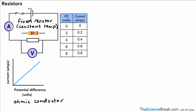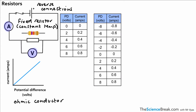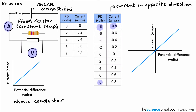Now we could reverse the connections on our cell or power pack, which gives us negative values for potential difference and current. For example, if 8 volts gave us 0.8 amps, then minus 8 volts gives us minus 0.8 amps. This is because reversing the connections also reverses the direction of current, which is shown on the ammeter as a negative value.